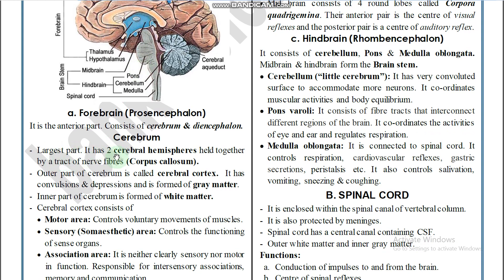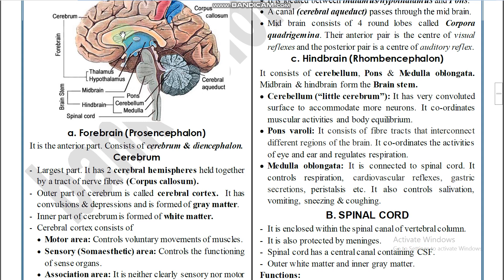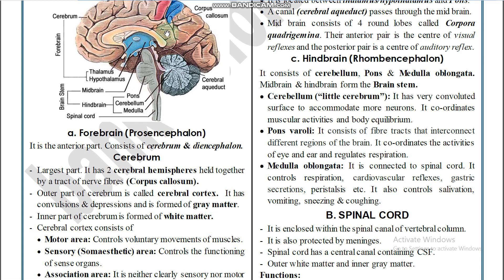The cerebrum is the largest part of the brain. It has two cerebral hemispheres held together by a tract of nerve fibers called the corpus callosum. The outer part of the cerebrum is called the cerebral cortex, which has convolutions and depressions and is formed of gray matter — non-myelinated neurons. The inner part of the cerebrum is formed of white matter — myelinated axons.